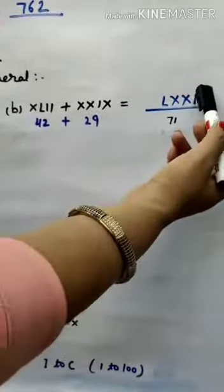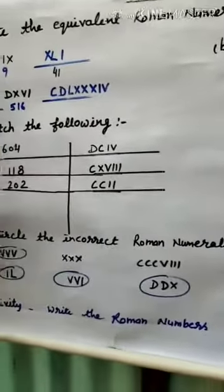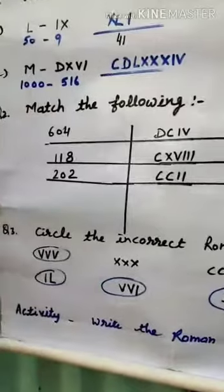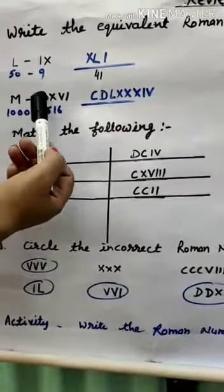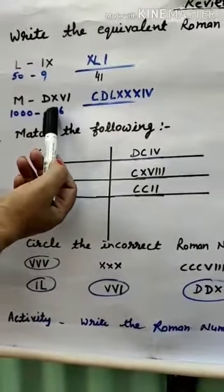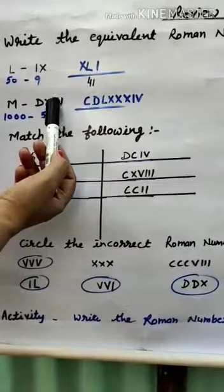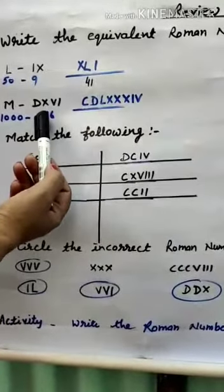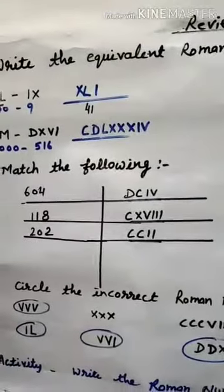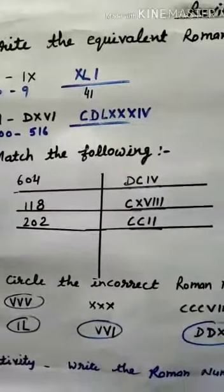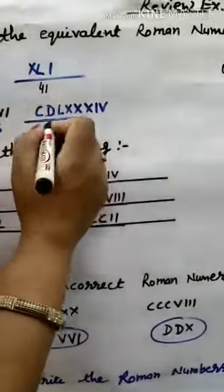To write 71 in Roman Numerals: L (50) plus XX (20) gives 70, then add I (1) to get LXXI. Next: M minus DXV I — M is 1000, D is 500, X is 10, VI is 6, so 516. Then 1000 minus 516 equals 484.